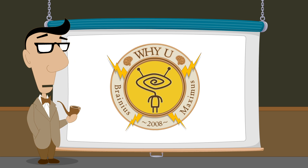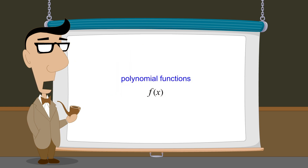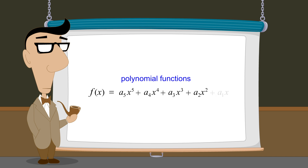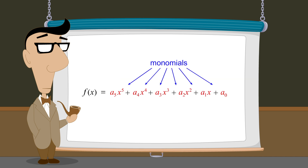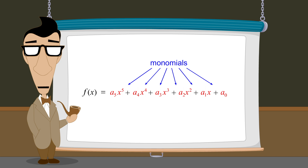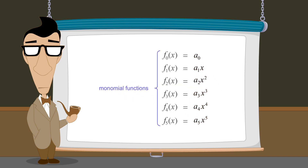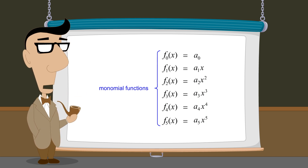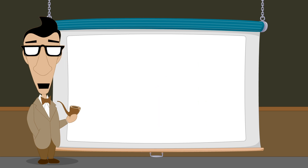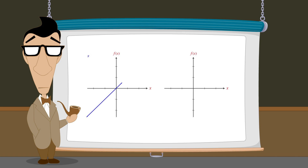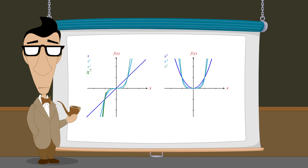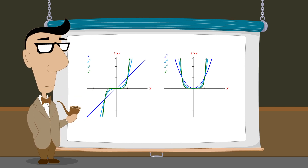When we first introduced polynomial functions we saw that polynomials are the sum of one or more monomials. We also saw that if we think of each monomial as a separate function, then a polynomial function can be thought of as the sum of these monomial functions. Although the graphs of monomial functions are relatively simple, the graphs of the polynomial functions produced by summing these functions can be quite interesting and varied.